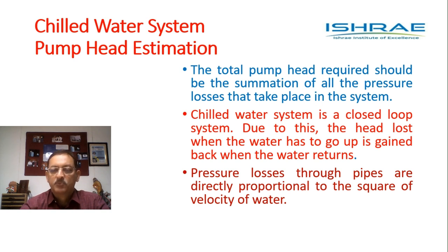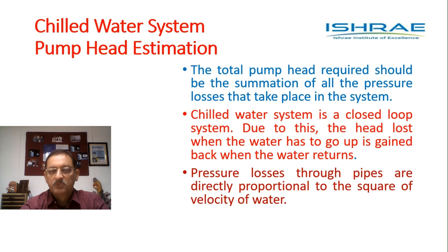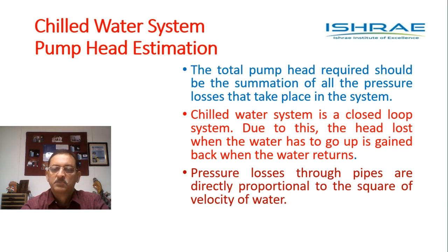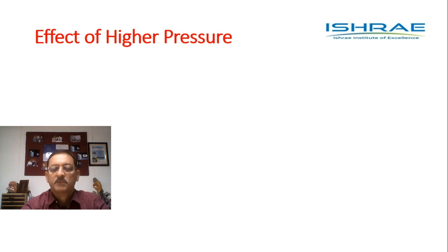This is what we need to remember when sizing the pumps. Pressure losses through pipes are directly proportional to the square of the velocity of water, so the higher the velocity we choose, the more will be the pressure losses. We should choose lower velocities — the maximum velocity as specified in books is three meters per second in pipes, and we should normally remain well within 80 percent of that maximum.